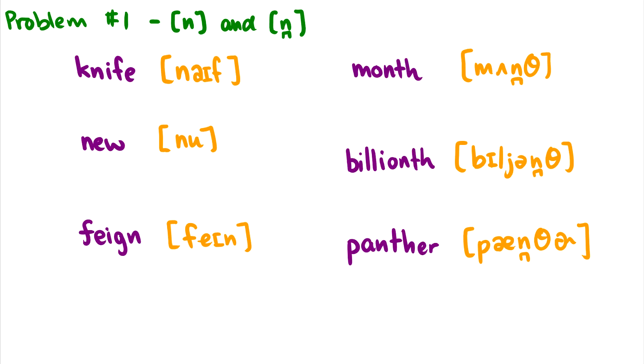The first problem we're going to look at is in English, and it is the difference between an [n] and an [n̪]. So you probably didn't hear much of a difference between these two sounds, but the [n] on the left is your standard alveolar [n], and the [n] on the right is a dentalized [n]. This means that your tongue is closer to your teeth.